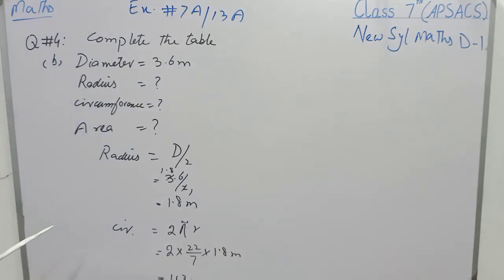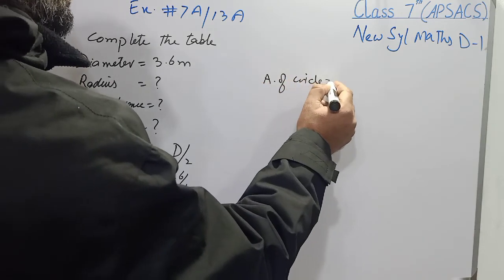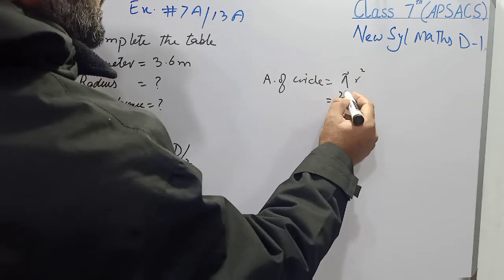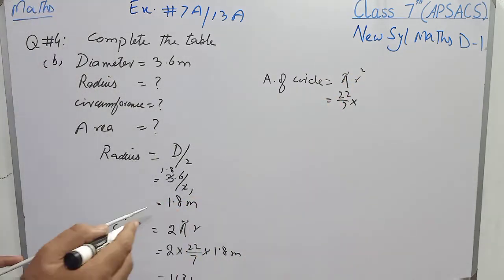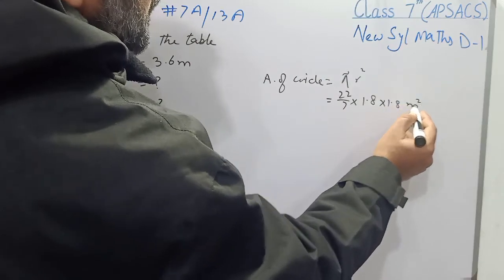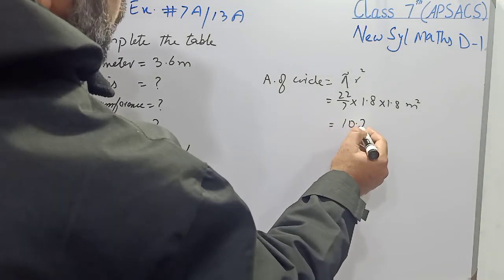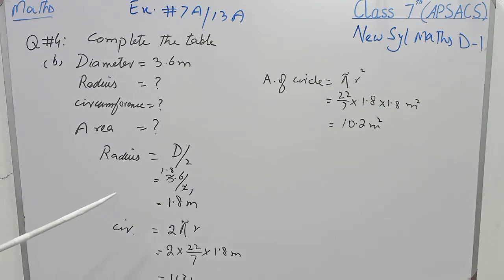Now we have to find the area of the circle. The formula is πR²: (22/7) × 1.8 × 1.8. Multiply 22 with 1.8 and again 1.8, then divide by 7, and we will have 10.2 meter square. 10.2 m² is the area of the circle.